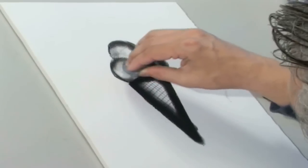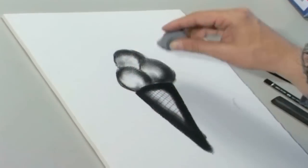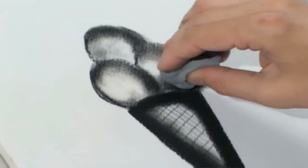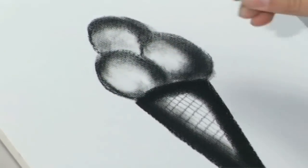Charcoal can be rubbed out very easily with a kneaded eraser, so special effects such as highlights can be very easily and perfectly obtained by simply erasing small areas.